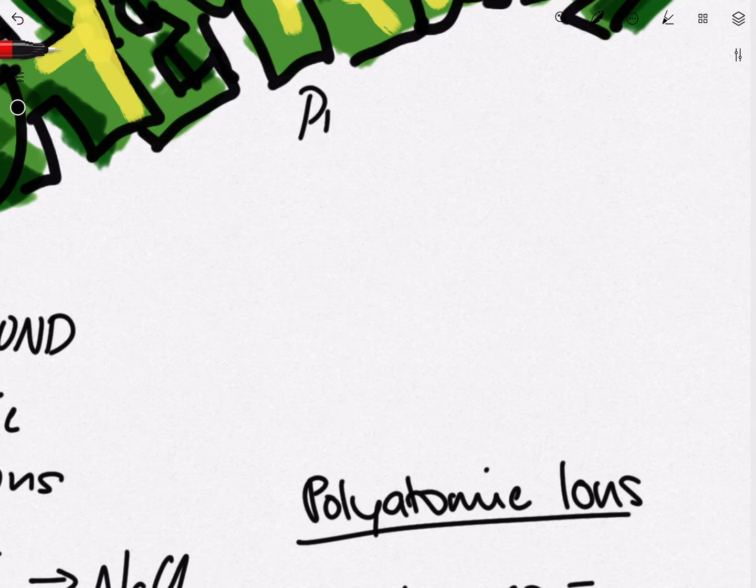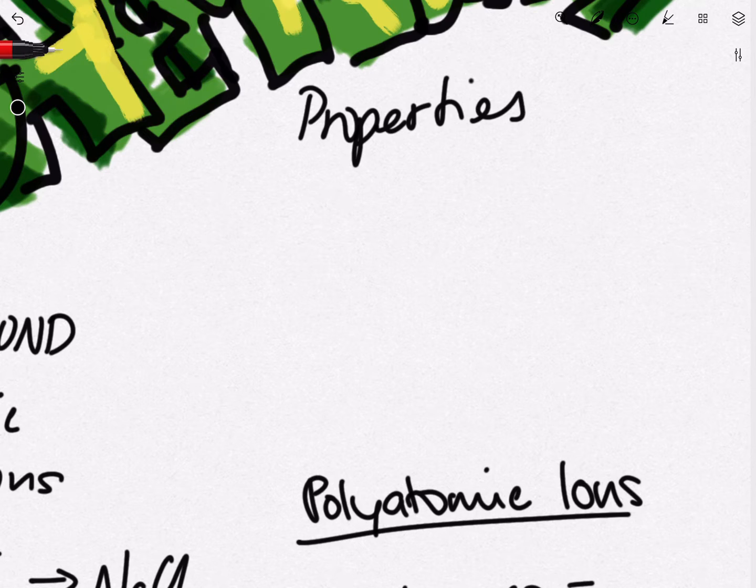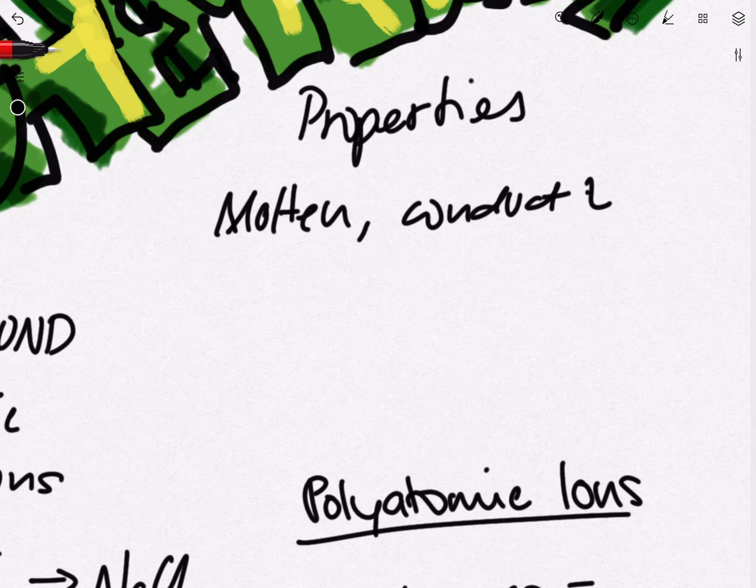Next up, let's take a quick look at the properties of ionic bonds and structures. First up, when they are molten, they conduct electricity. This is because electrons are free to move around, meaning they can easily conduct a current from one point to another.